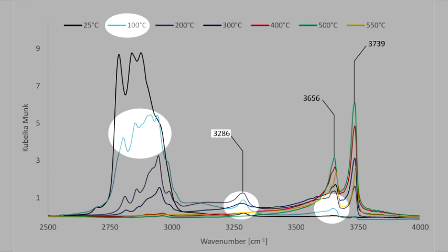The band at 3286 may be assigned to the ammonium species that could form as intermediates on the silica surface. The band at 3656 originates from the tin OH groups formed due to restructuring of the tin surface species during calcination.